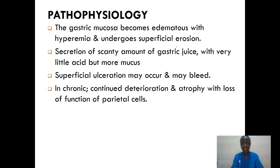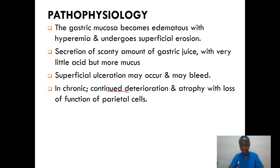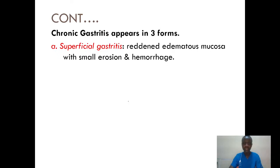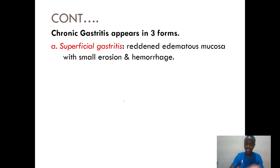For chronic gastritis, it's a type that always has reoccurrence. We'll have continued deterioration, atrophy, and loss of function of the parietal cells, which brings about inadequate intrinsic factor. So this person will have an inability to absorb vitamin B12. We've talked about the two types of gastritis — acute and chronic — and chronic appears in three forms. One, superficial gastritis.